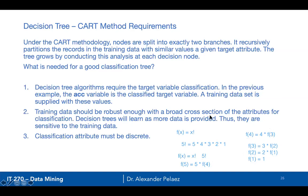CART requires your target variable — in this case the ACC variable — and we give it a training set. We're going to use that training set to predict what the test set categories of acceptability will be. If we're using CART, the classification attribute must be discrete — the response or target variable needs to be categorical: yes or no, acceptable/unacceptable/very good/good, and so forth.